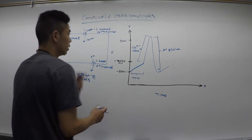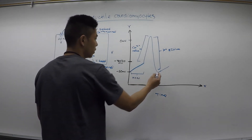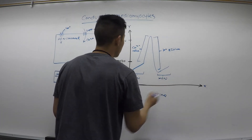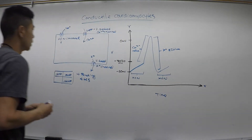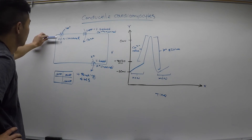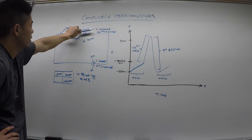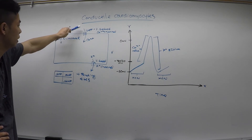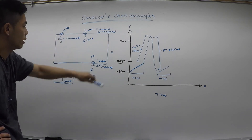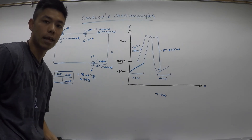Our graph will keep repeating itself, cycling through the HCN channel phase again. So for conductile cardiomyocytes, the three important channels to remember are: HCN channels, our voltage-gated calcium channel (also known as our DHP receptor), and our voltage-gated K+ channel, which is responsible for repolarization of the cell.